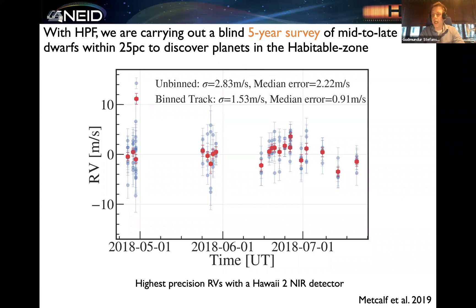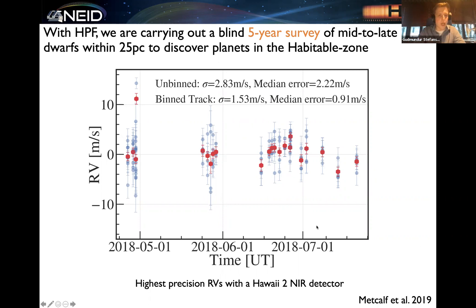We have already installed HPF and have been observing now for a couple of years. We're currently carrying out a five-year blind survey using HPF of mid-to-late M dwarfs to look for planets in the habitable zones around these stars. Here I'm showing an RV time series of the nearby bright M dwarf Barnard's Star, where we're seeing a precision of around 1.5 meters per second scatter. In principle, our RV error bar on each point is on the order of 0.9 meters per second. Our current scatter is around 2 meters per second, but our information content suggests we should have a precision of around 0.8 meters per second.